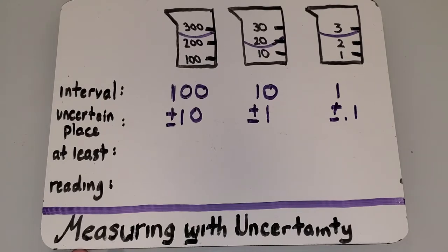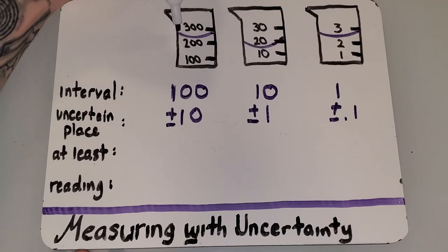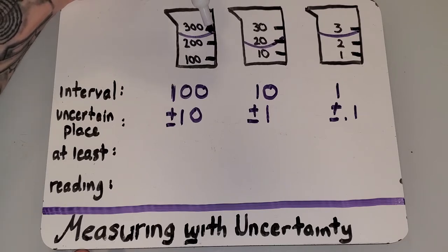Once you have this information, then it becomes really easy to start reading your measurement. Usually, liquids are going to have this curve called a meniscus, and you're always going to measure from the bottom of this curve.